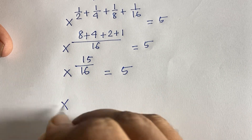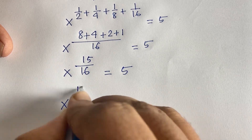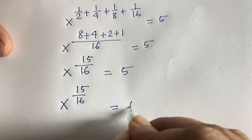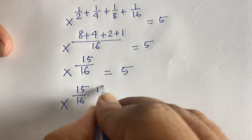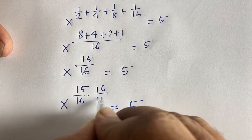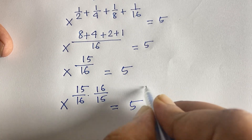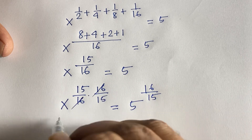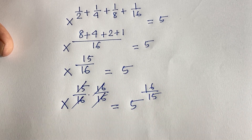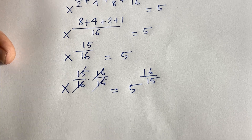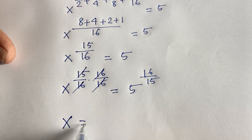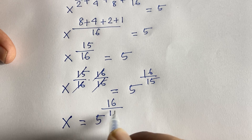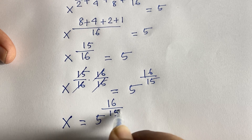Now we need the value of x. We have x to the power of 15/16 equals 5. I raise both sides to the power of 16/15. The exponents 16 and 15 cancel on the left side, giving us x equals 5 to the power of 16/15. This is our final answer for Method 1.